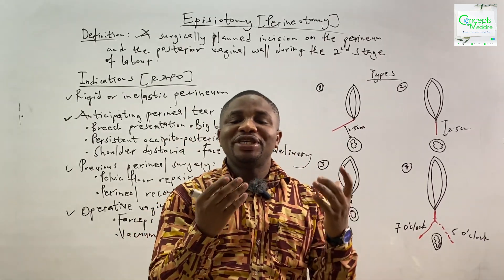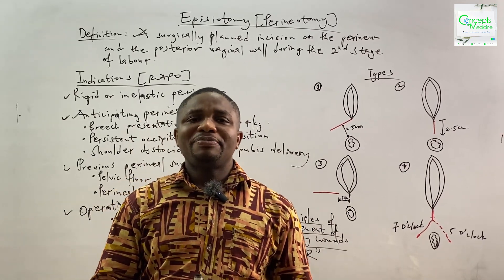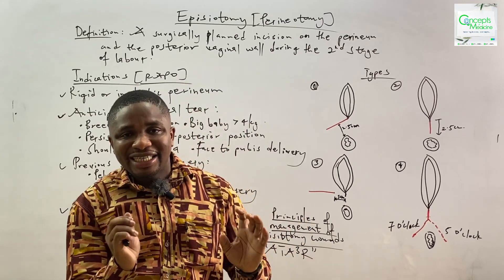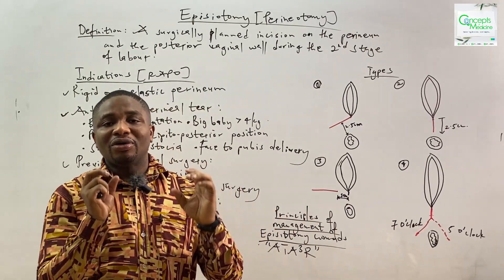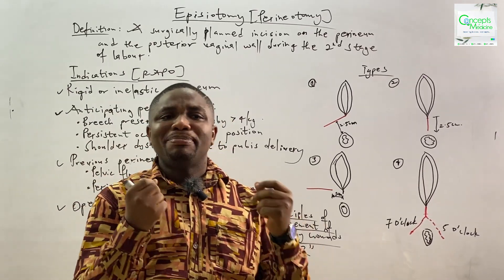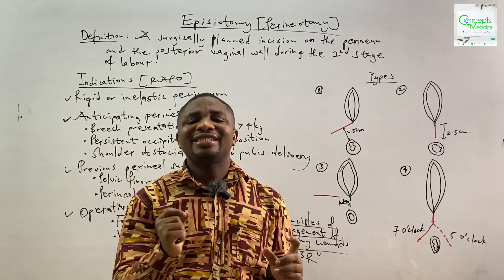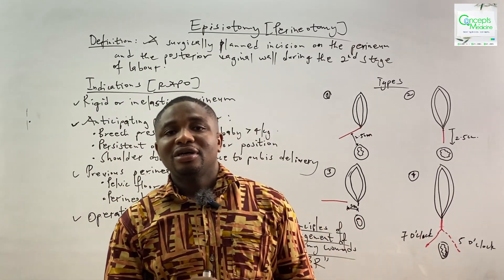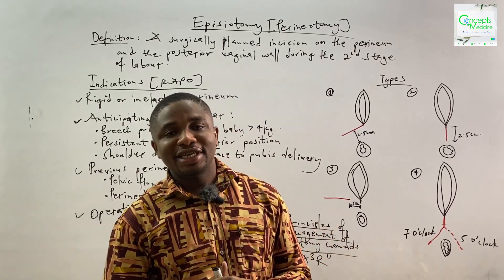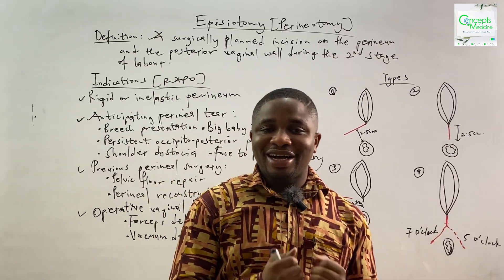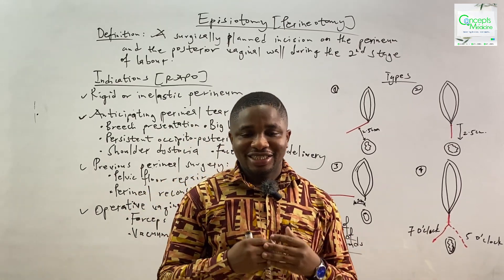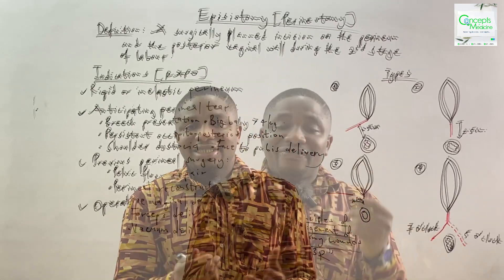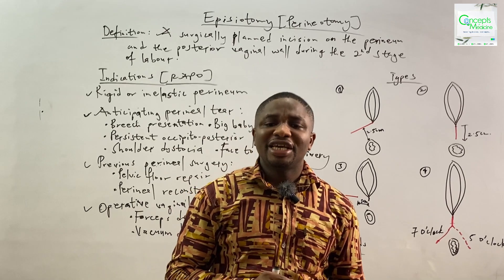So when we say episiotomy, what do we mean by that? Episiotomy or perineotomy is a surgically planned incision on the perineum and the posterior vaginal wall during the second stage of labor. Meaning that you can only give an episiotomy during the second stage of labor. You should also know that episiotomy or perineotomy is, in fact, an inflicted second degree perineal injury.